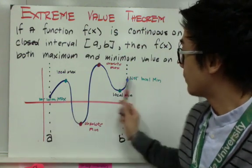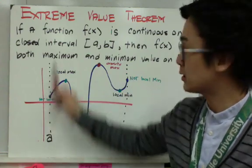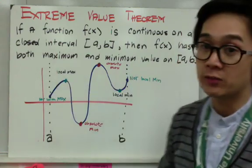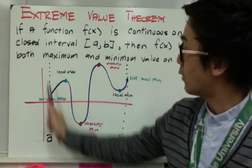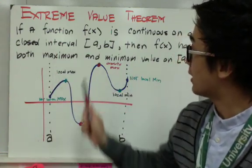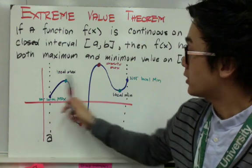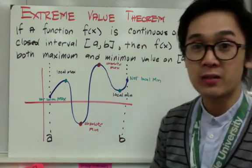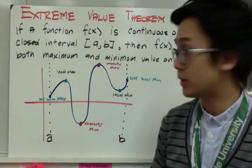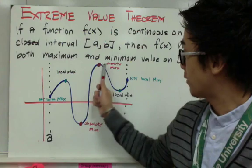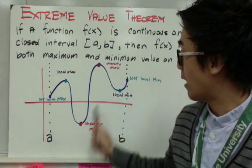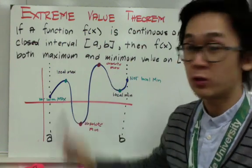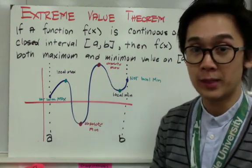These will be the endpoints based on your given interval. This is how you represent the function on a given interval where you can see the extrema — both absolute max and minimum, and local max and local minimum.